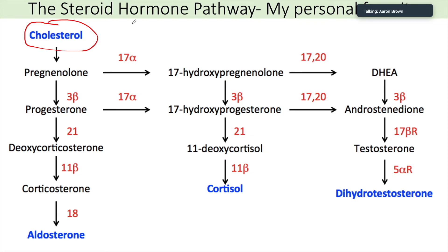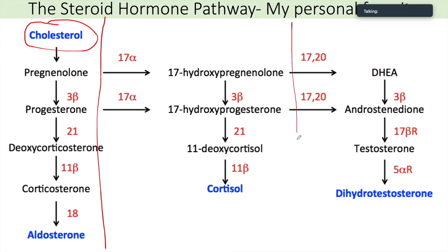So we know it's all from cholesterol. I want to put a line here and say, okay, so this is going to be my glomerulosa, this is going to be my fasciculata, and this is going to be my reticularis. We have all the layers of the cortex here.